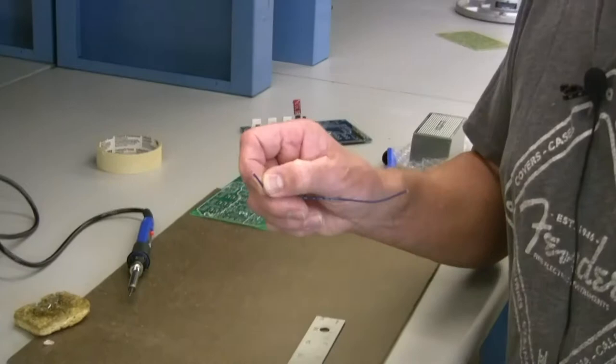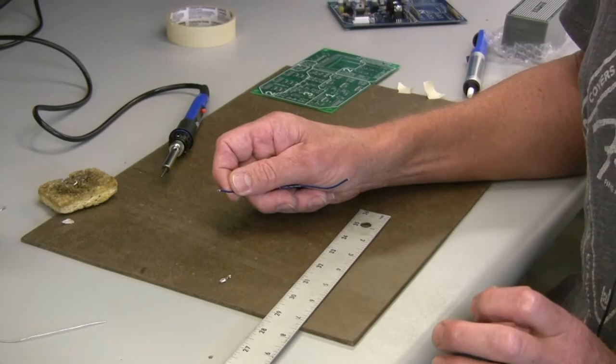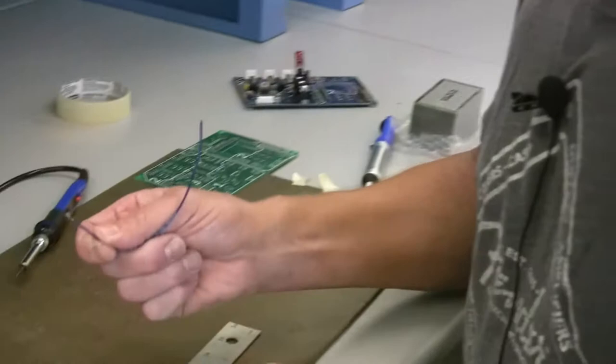We can use a crimping tool, but if we don't have a crimping tool, we can also solder it. I'm going to show you how to do that.